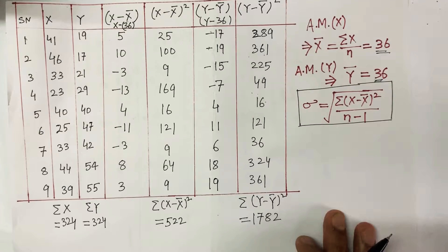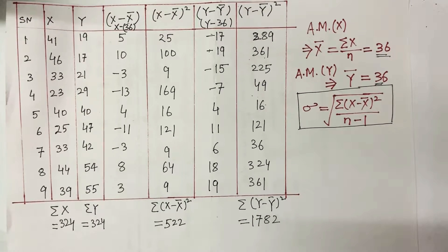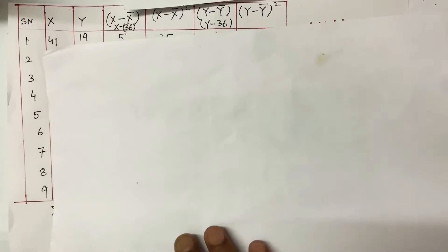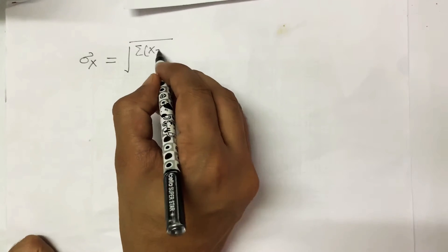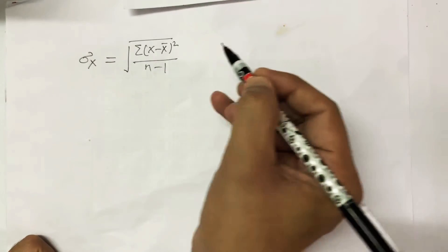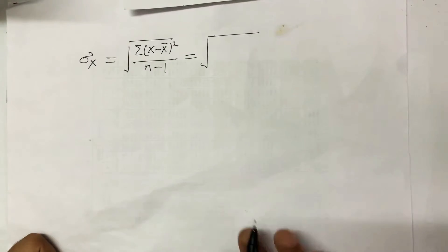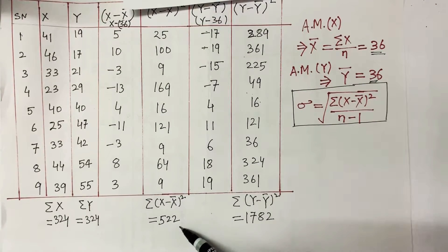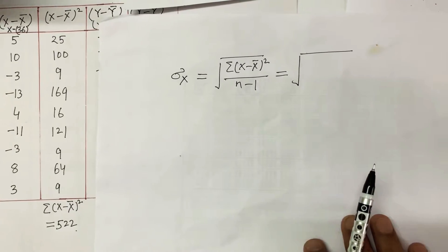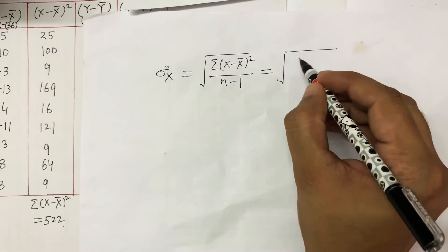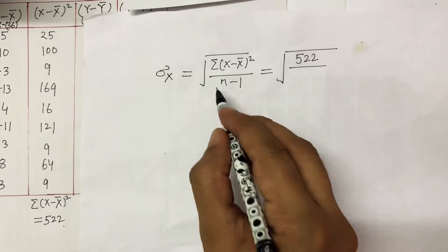Now let's find the standard deviation. I'll use another sheet to keep things clear. The formula for standard deviation of X is the square root of the sum of (X minus X-bar) squared divided by n minus 1. The sum of (X minus X-bar) squared is 522. The number of observations n is 9, so n minus 1 is 8. So it is the square root of 522 divided by 8.